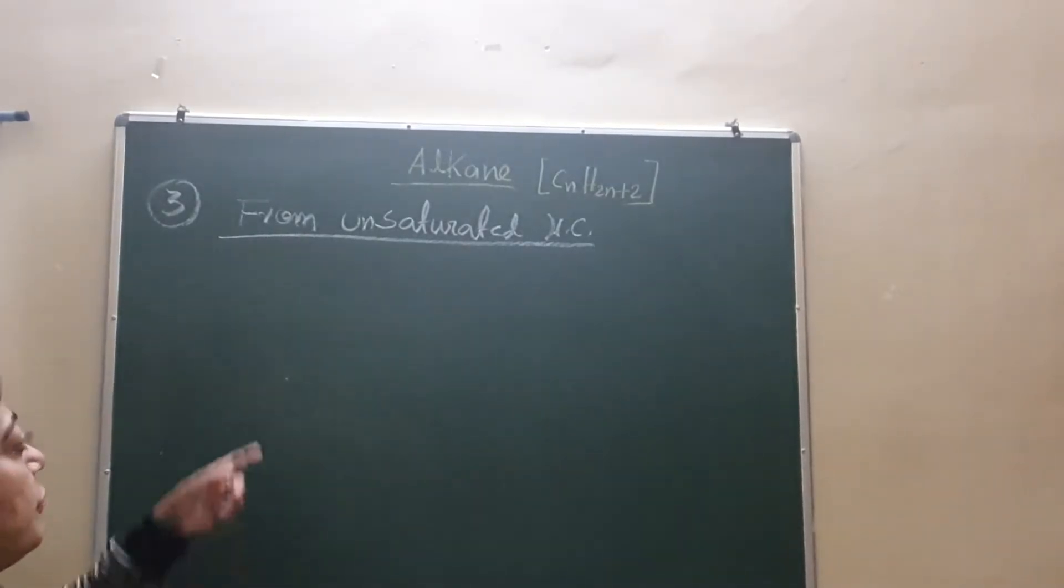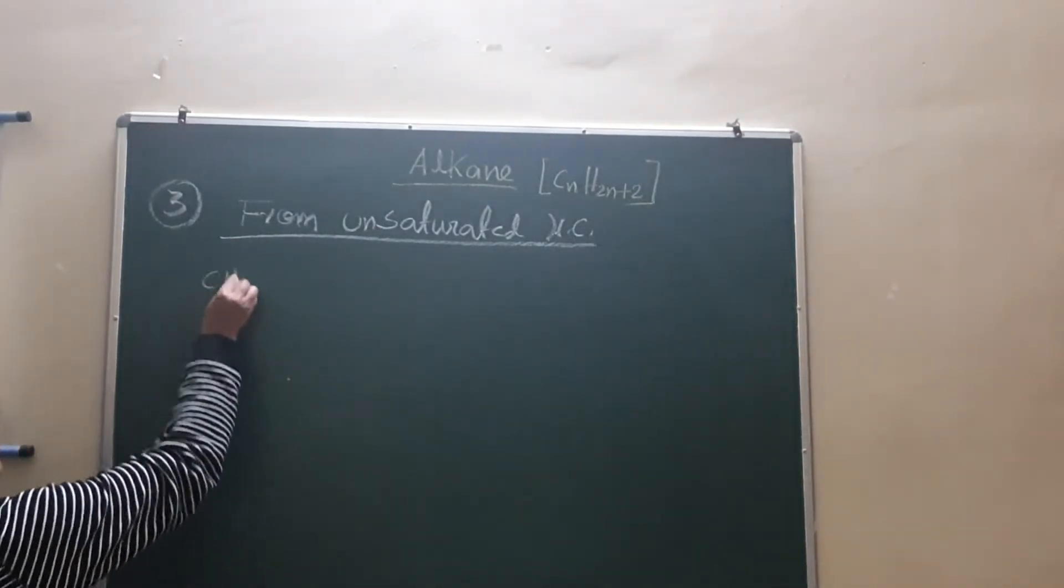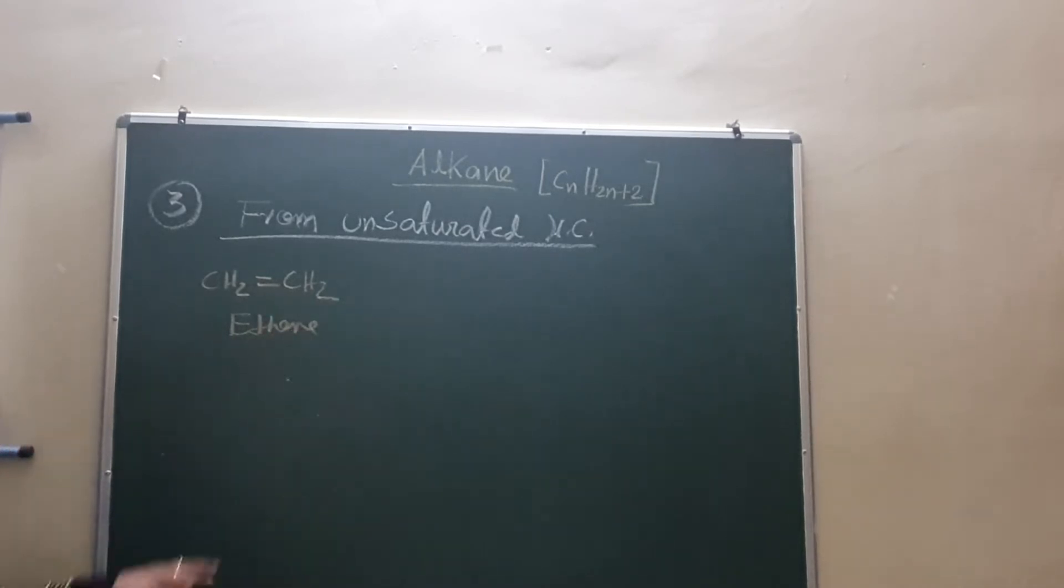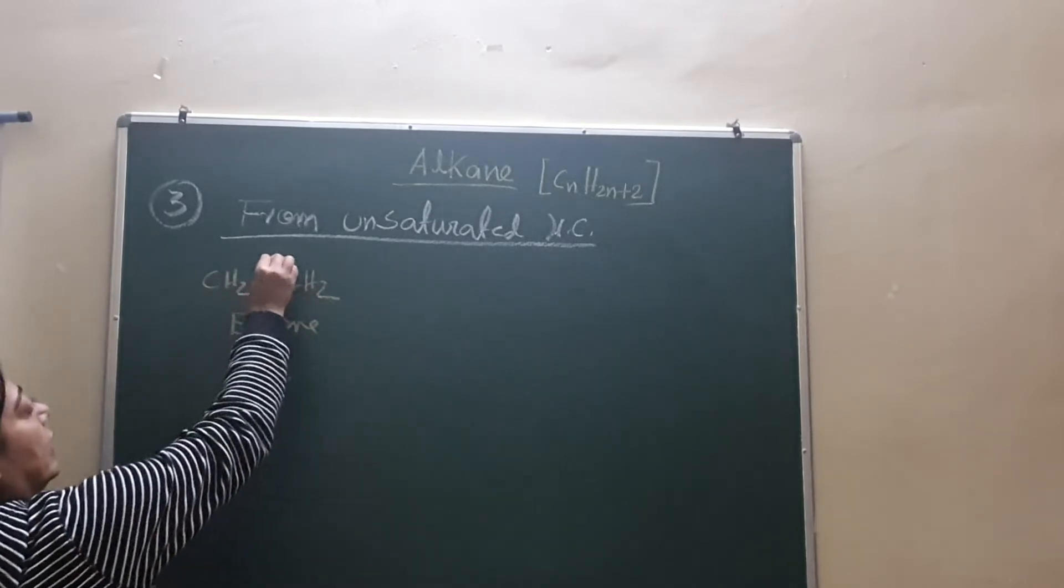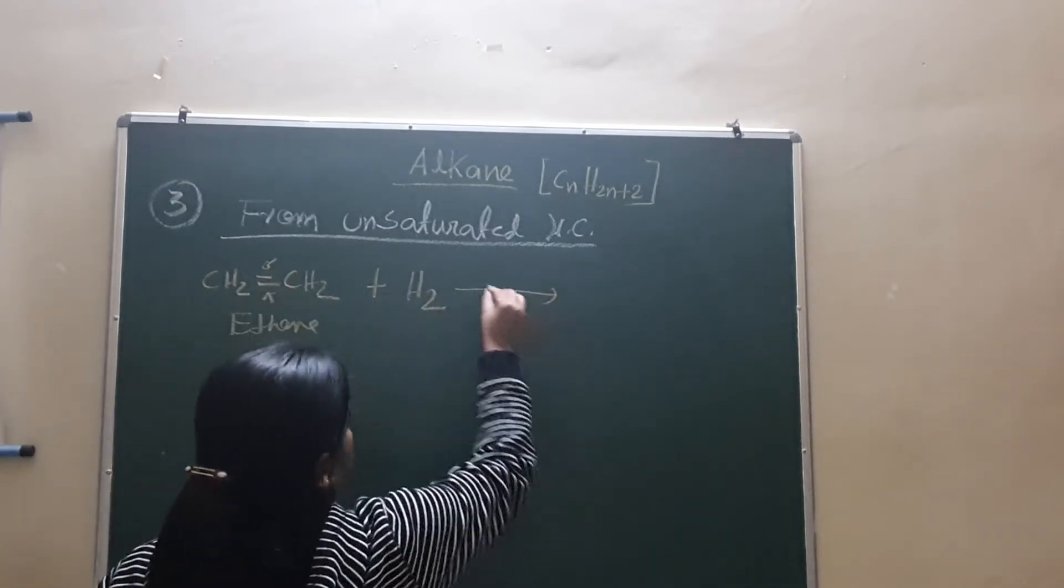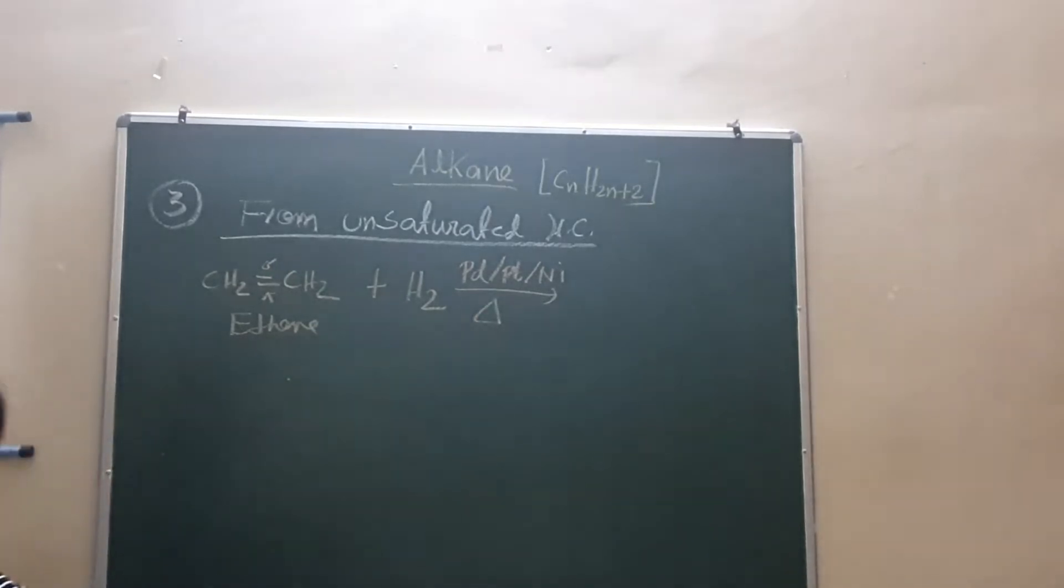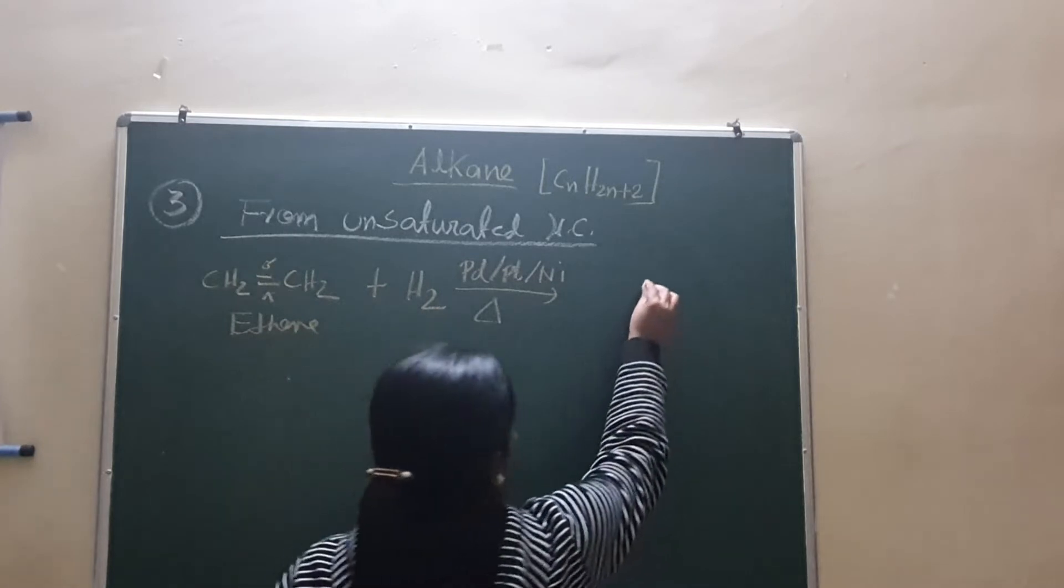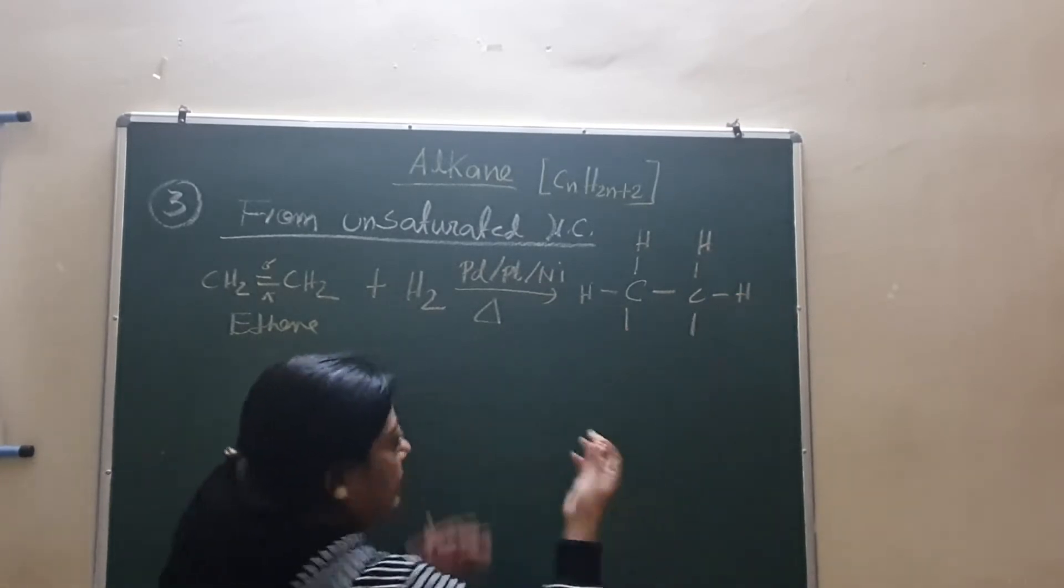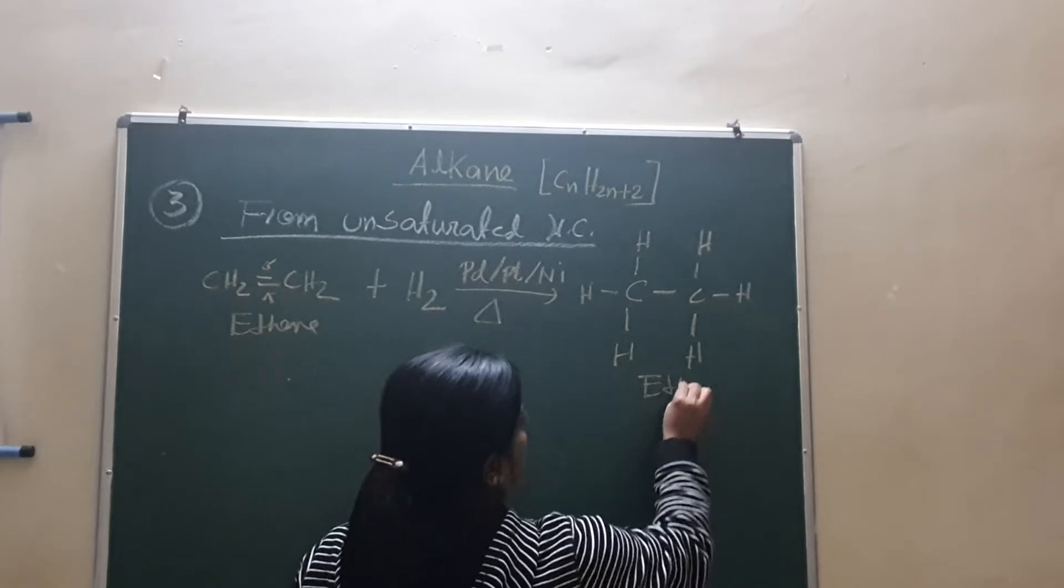The third method is from unsaturated hydrocarbon. Unsaturated hydrocarbon can be alkene or alkyne. Suppose we have started from alkene: CH2 double bond CH2, this is your ethene. And ethene, it is unsaturated because double bond is here. One bond is sigma and another bond is pi. And you know, pi bond is weak in nature. So this is reduced by hydrogen in the presence of either palladium catalyst or platinum catalyst or nickel catalyst and it should be heated.